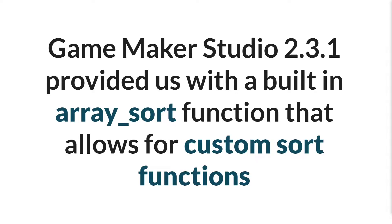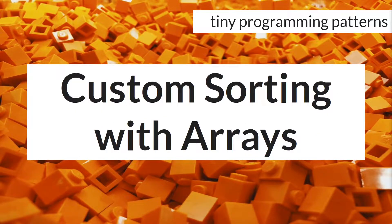GameMaker Studio 2.31 provided us with a built-in array sort function, which has some basic sort functionality, such as the ability to sort numbers in ascending or descending order, or strings in alphabetical order. But more importantly, it allows you to give it a custom sort function — a function that you write and then pass into the array sort function that determines how your array will be sorted. Hello everyone, my name is Sam Spade, and in the next few minutes I'm going to walk you through how to write these custom functions so that you can sort your arrays however you want.